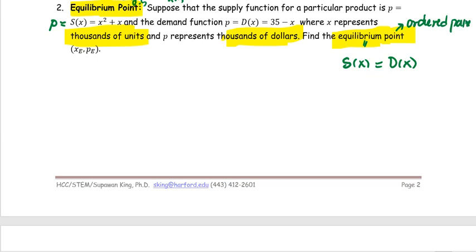The format of the answer has to be (x_e, p_e), where subscript e denotes the equilibrium point. Step one: solve for x. Step two: find or evaluate the value of p.